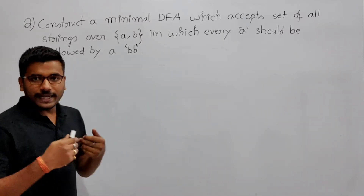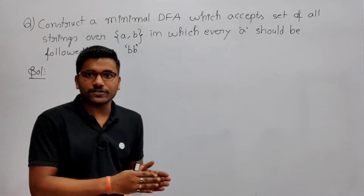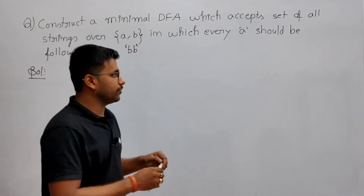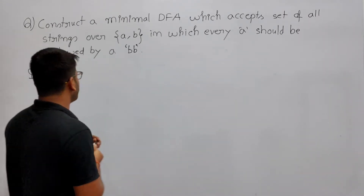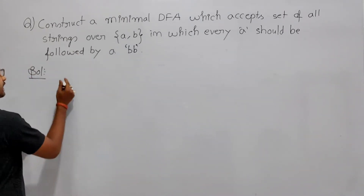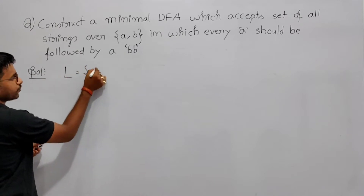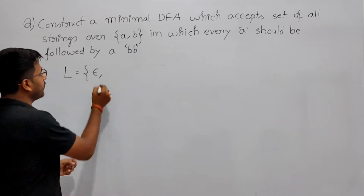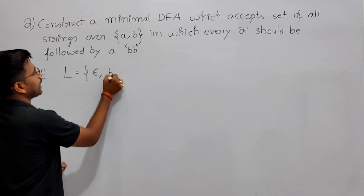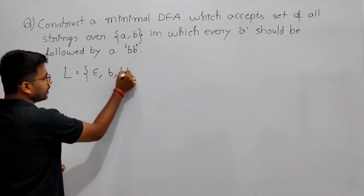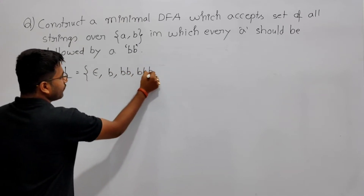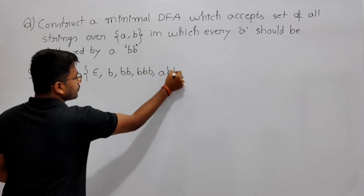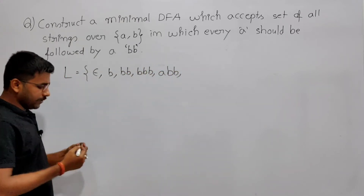So after every A, there should be two B's after that. But if it is not having A, it can be anything. So epsilon belongs to the language because it is not having A. Any number of B's belongs to the language. But if it is having A, then after that there should be two B's.